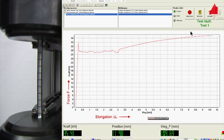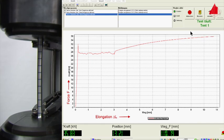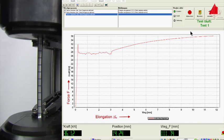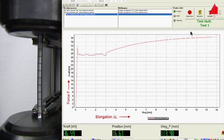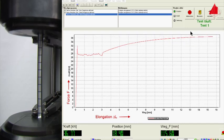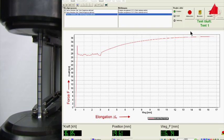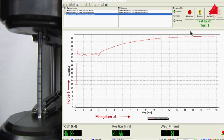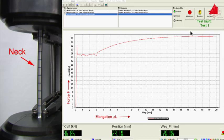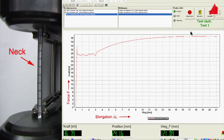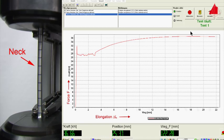This means that the test piece gets longer and thinner but keeps a cylindrical shape. As soon as the maximum force is reached, a neck begins to form at one point of the test piece. All further plastic deformation now only takes place at the neck, and eventually the test piece fractures there.